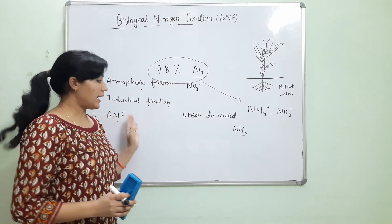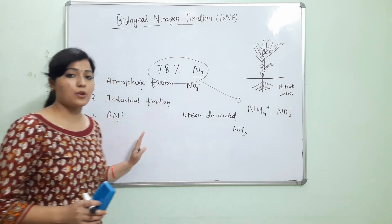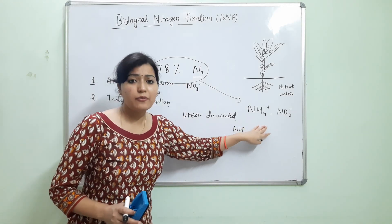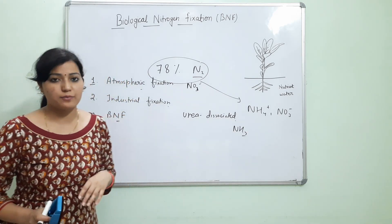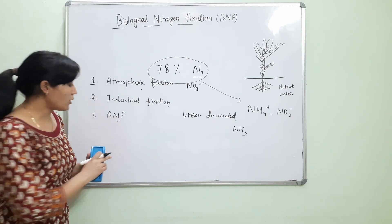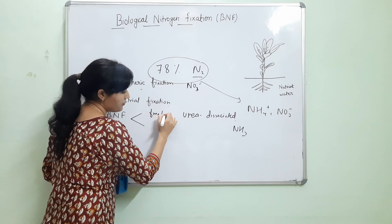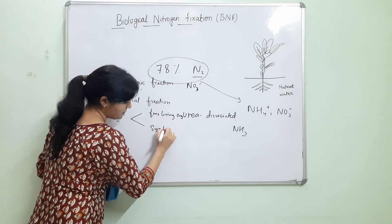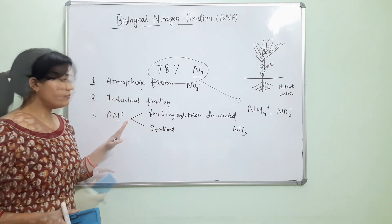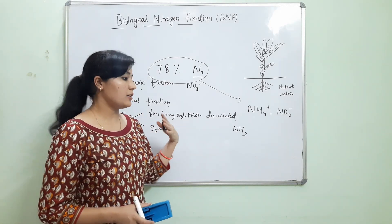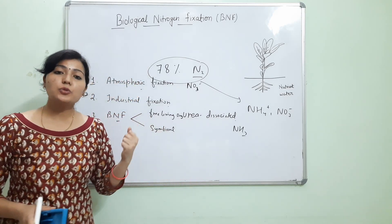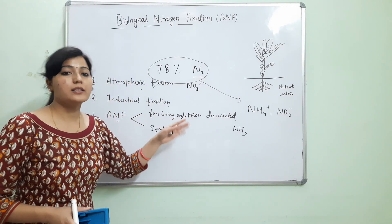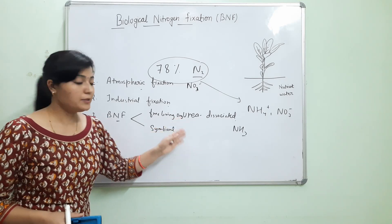In biological nitrogen fixation, atmospheric nitrogen is fixed into a usable form with the help of microbes — it may be plants or microbes. Biological nitrogen fixation can be broadly done by free-living organisms or symbiotic organisms. Free-living bacteria are freely present in the soil; they consume nitrogen for protein synthesis, and after their death, they provide nitrogen to the soil. For example, Azotobacter.